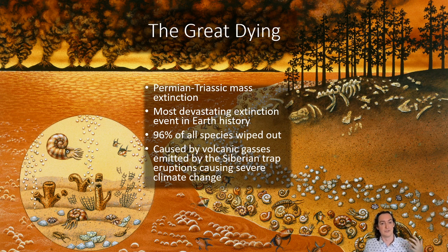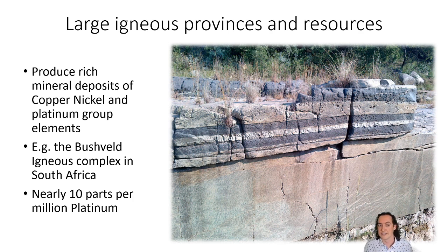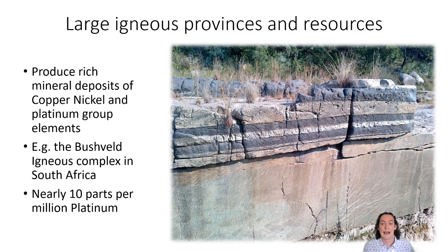So arguably, flood basalt eruptions have had some of the most dramatic impacts on climate, on the shape of the Earth, and on life as we know it. It's ironic, then, that large igneous provinces also provide us with really good resources and materials to currently combat climate change. They're associated with deposits of nickel and copper, which are good for electronics, but critically they're rich in platinum group elements — elements like platinum, iridium, and osmium — which are critical in the green revolution and the technologies we're developing to produce green energy. For example, platinum is used in catalytic converters in cars to remove toxic chemicals from exhaust fumes.